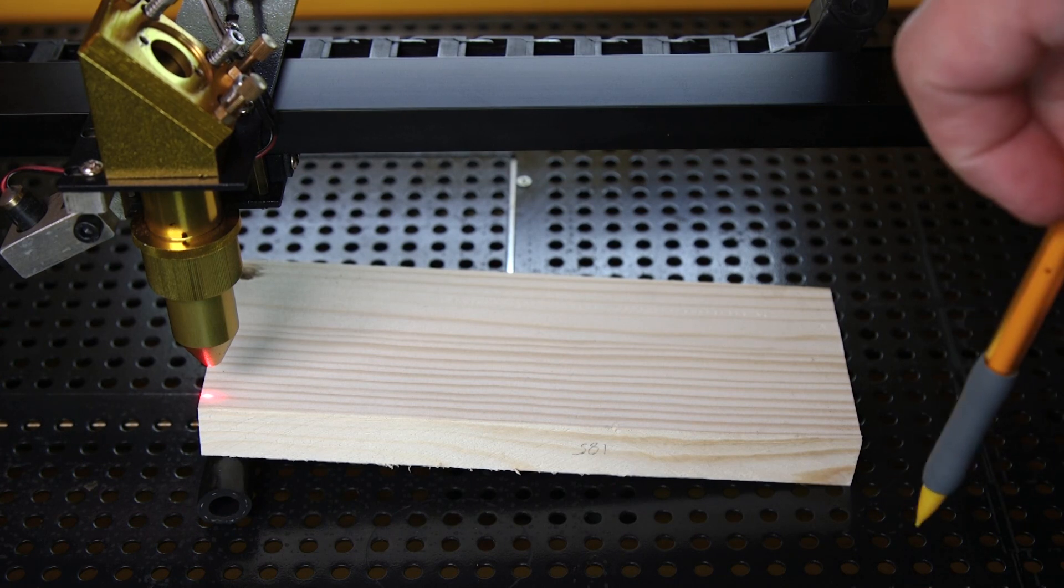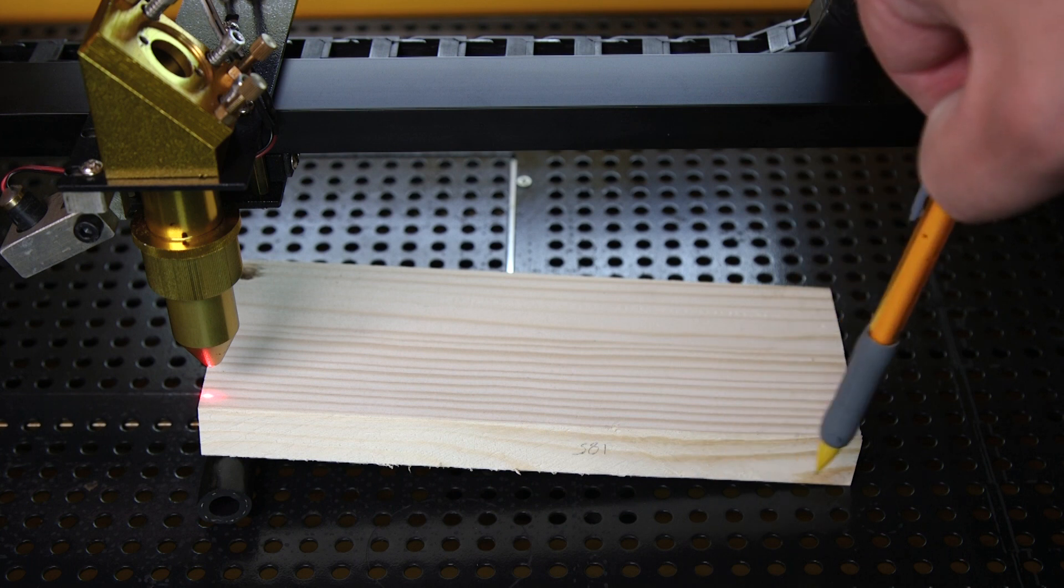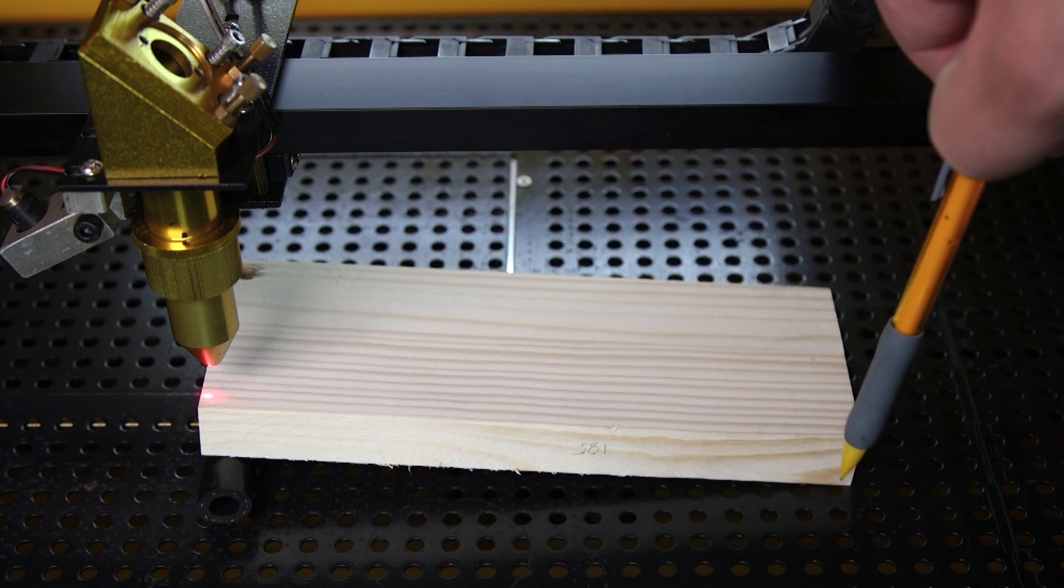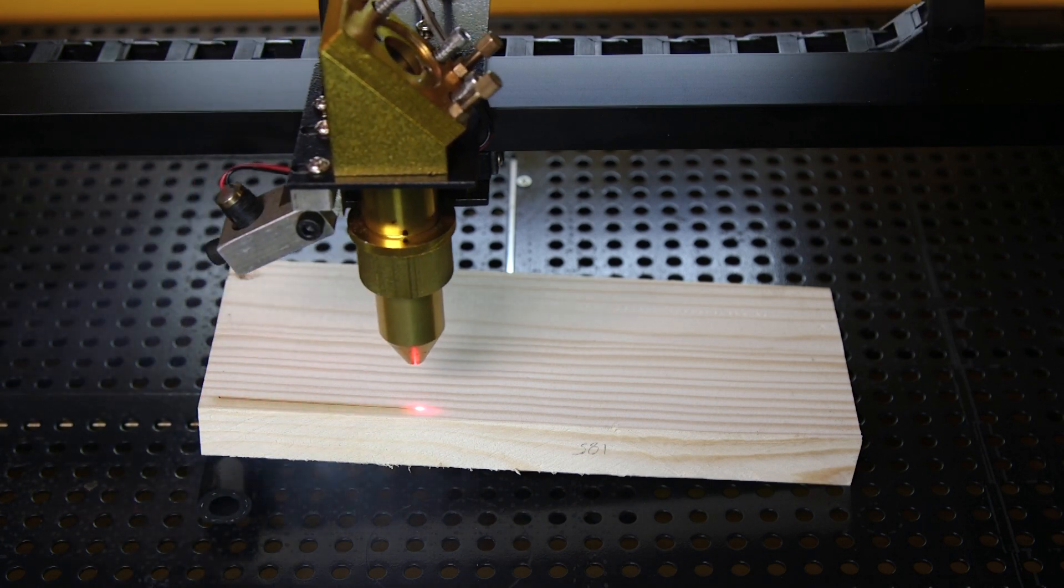To start, all you want to do is make sure that your scrap piece of wood is on an angle. As you can see, I've used my piece of hose to wedge my board. Now all you're going to do is engrave a straight line about the length of your scrap piece of wood.